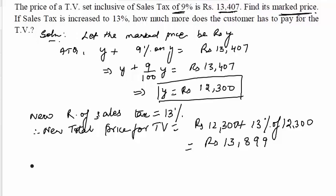Now we need to find how much more money the consumer has to pay. Therefore, more money paid will be Rs. 13,899 minus Rs. 13,407. That is, the price paid with 13% sales tax minus the price paid with 9% sales tax.